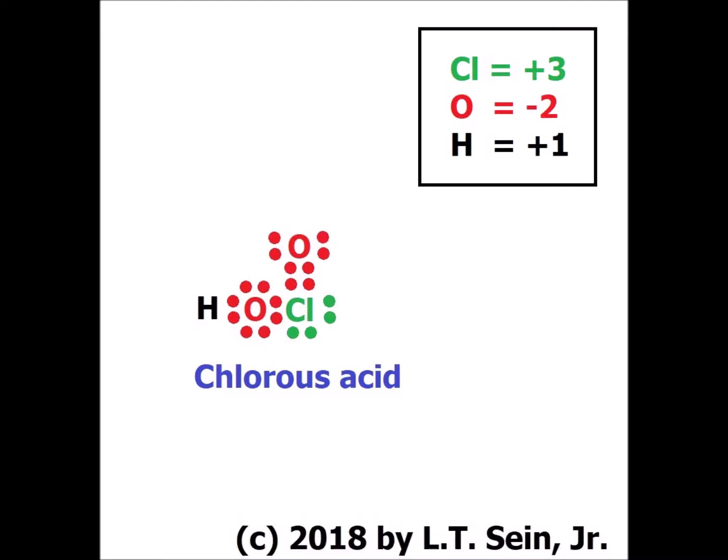Notice that when we have hypochlorous acid, chlorine is plus one, whereas when we have chlorous acid, the oxidation number of chlorine is going to be plus three.